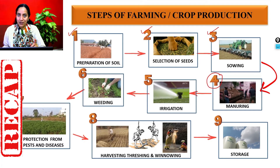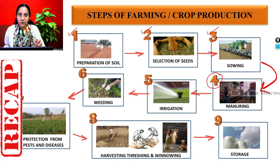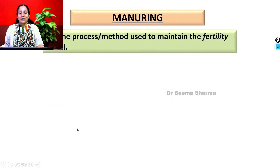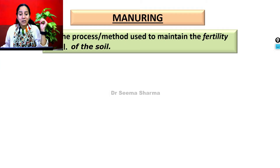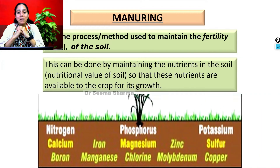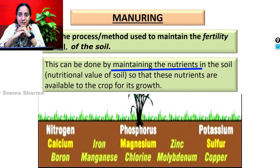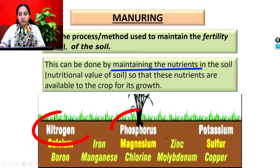We are going on a virtual tour of the field to see what the farmer does during manuring. Manuring is the process or method to maintain the fertility of the soil by maintaining the nutrients in the soil so that plants are able to get their nutritional requirements. The nutrients are elements that plants need for basic growth and development, and a few key ones are nitrogen, phosphorus, and potassium.